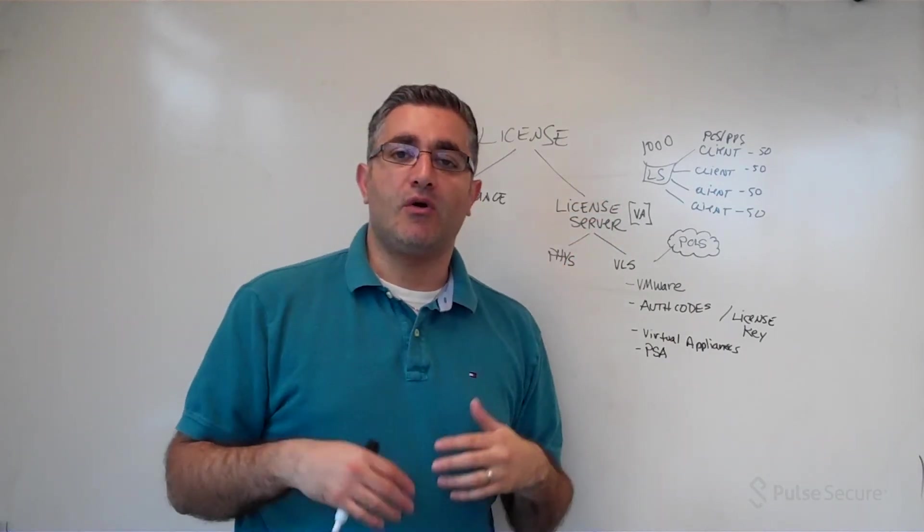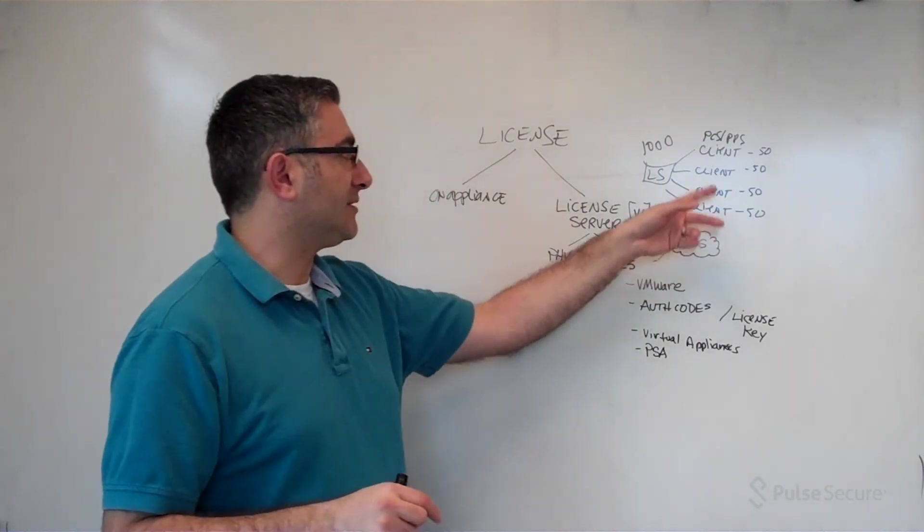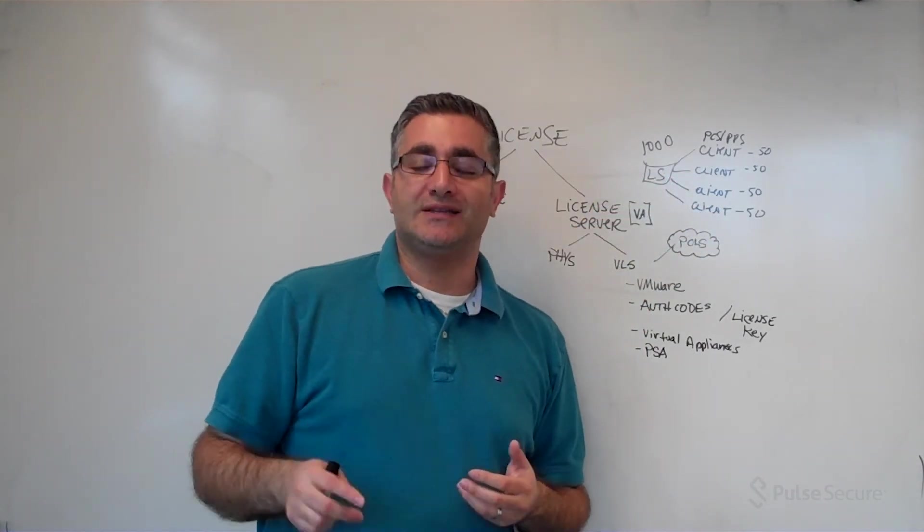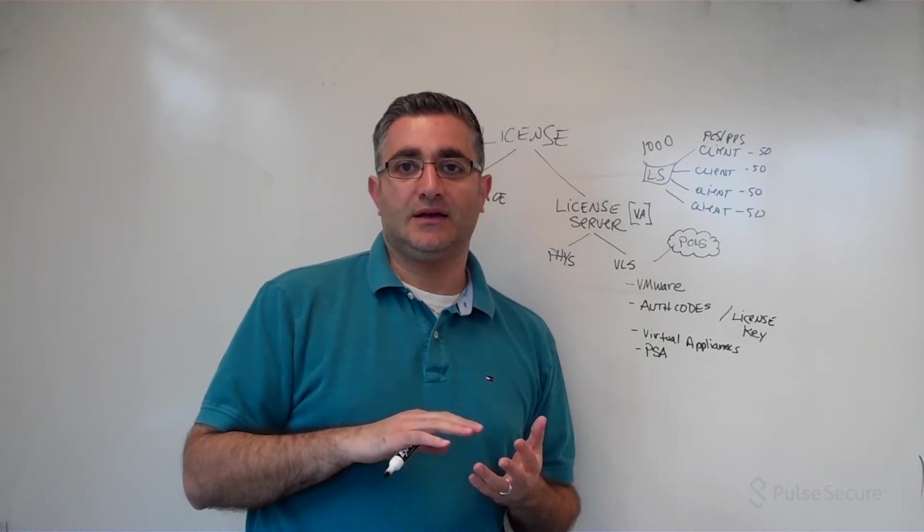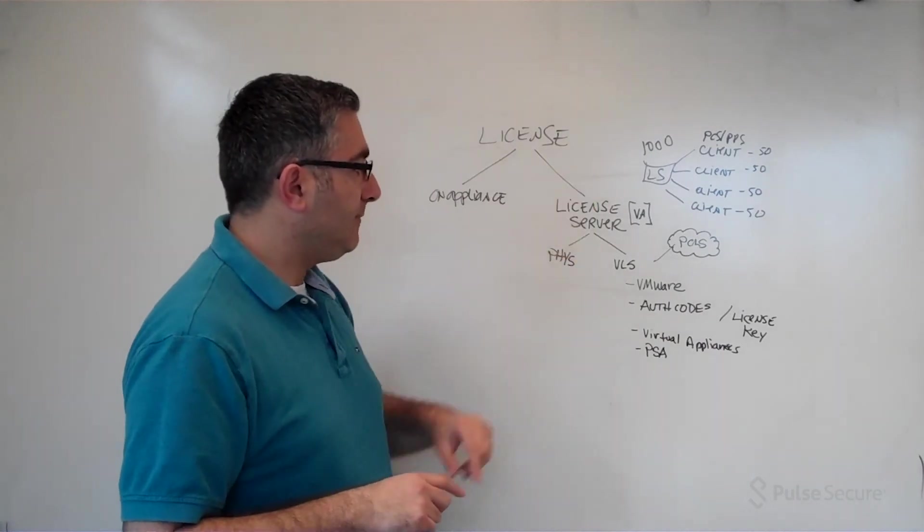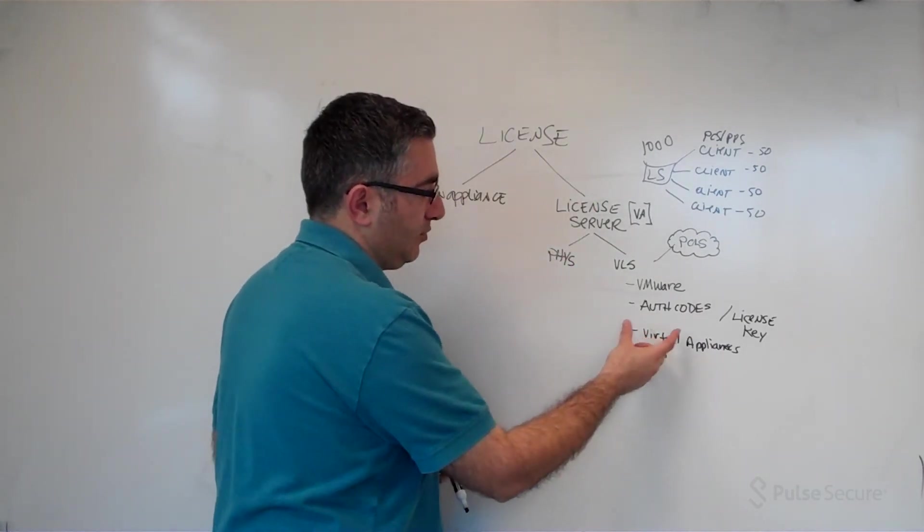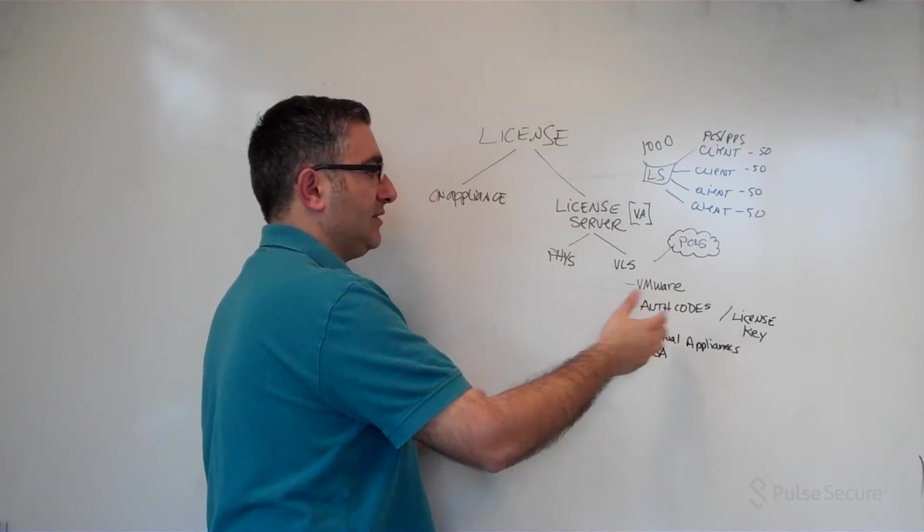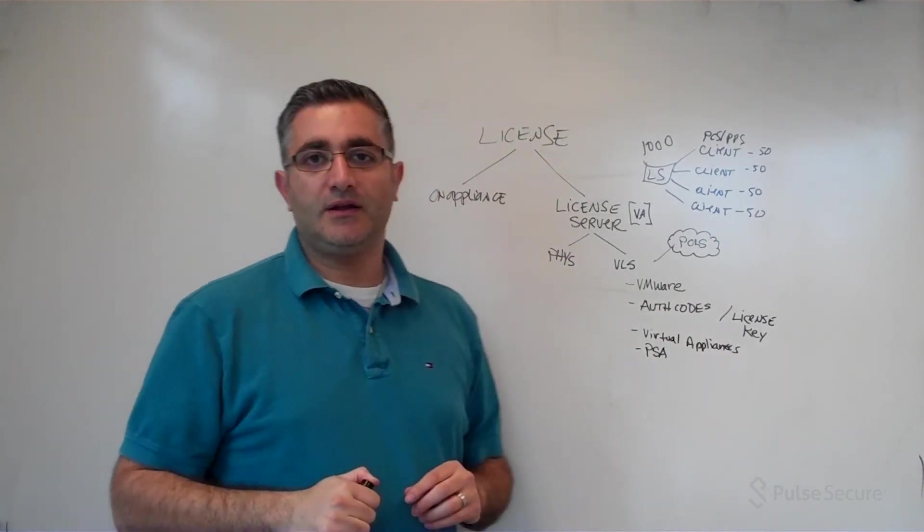And then once you order the license server itself, you would actually go and order all the licensing that you want to push out to clients. Those can be connection-based licenses, or it can be feature licenses like onboarding, collaboration, or meeting. So all of those things will be ordered, and then you'll be delivered auth codes. You put all those auth codes in, and then your virtual license server is ready to go and ready to distribute licenses.